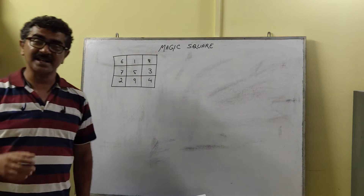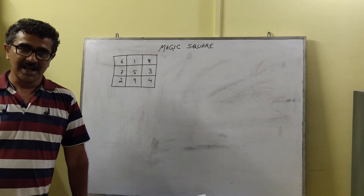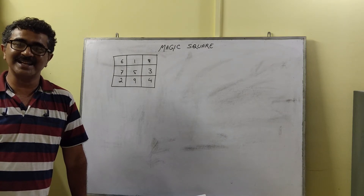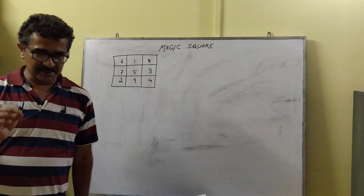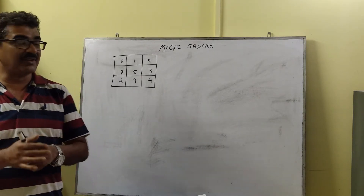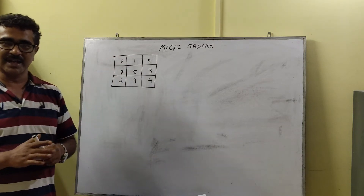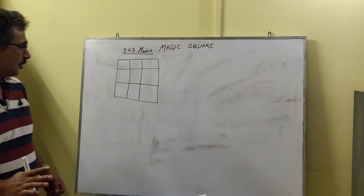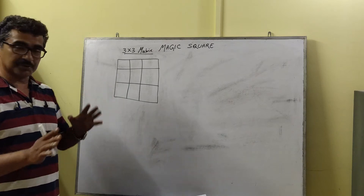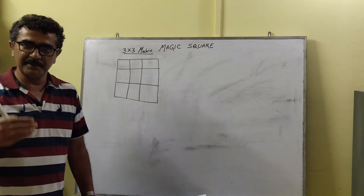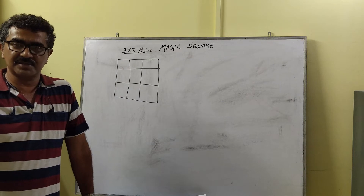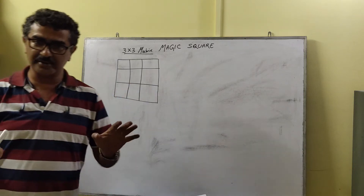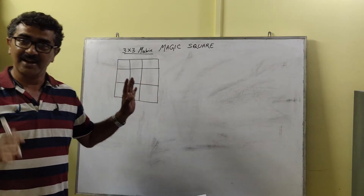Now the question arises: how do we generate it? I am going to show you a very simple technique where we generate an odd-sized magic square. We will have an odd-sized matrix where numbers are inserted automatically to get a magic square. The logic is totally general in nature — a generalized logic for any odd-sized matrix.